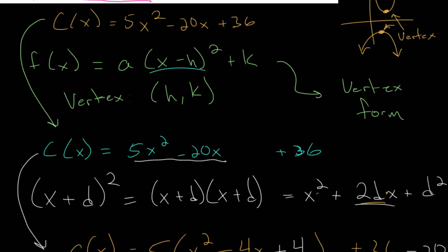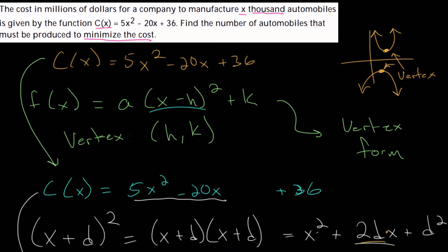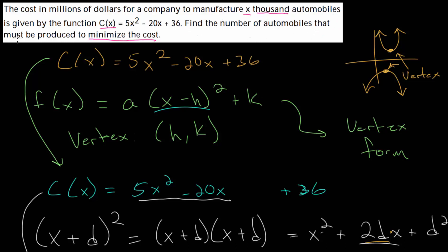So 2 should be the right answer, but we need to be careful about units. We need to find the number of automobiles that must be produced to minimize the cost. Remember that x represents thousands of automobiles, and we found that x equals 2, meaning this is really 2,000. If the company produces 2,000 automobiles, the cost will be at its lowest amount. If the company produces more or less, the cost will be more. Cost is in millions of dollars, so when we plugged in 2 and got 16, this was really 16 million dollars to produce those 2,000 automobiles.